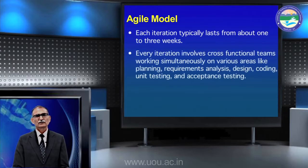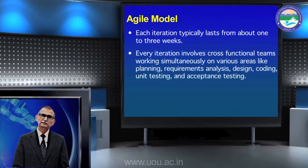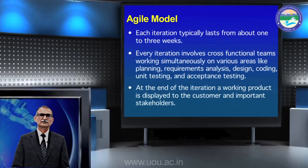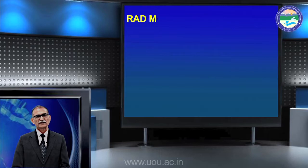Every iteration involves cross-functional teams working simultaneously on various areas like planning, requirement analysis, design, coding, unit testing, and acceptance testing. It is a very human-resource intensive model — you will need different specialized teams because all work runs in parallel. At the end of each iteration, the working product is displayed to the customer and all important stakeholders. We show the working product and ask if they are satisfied, otherwise we make further changes.